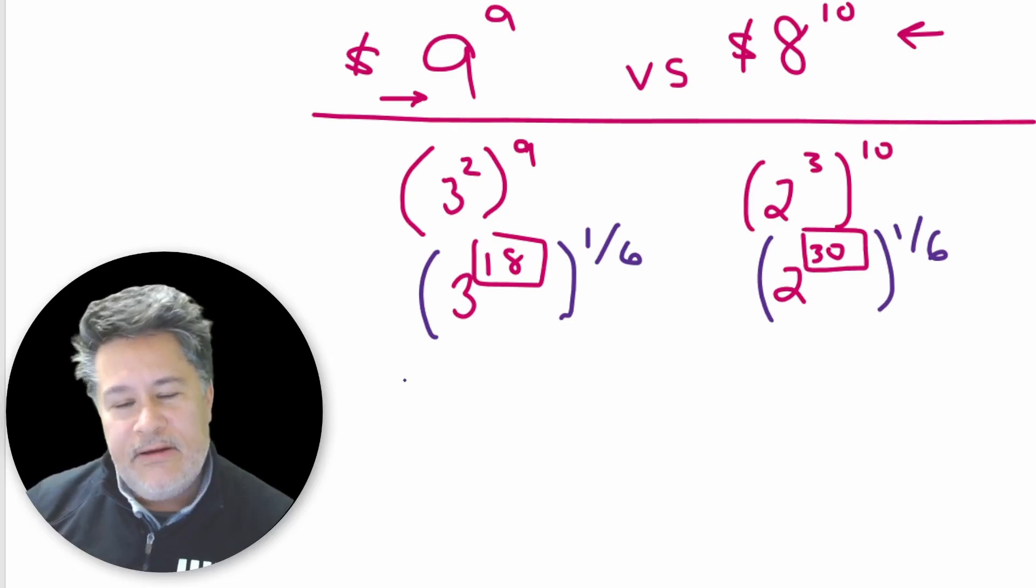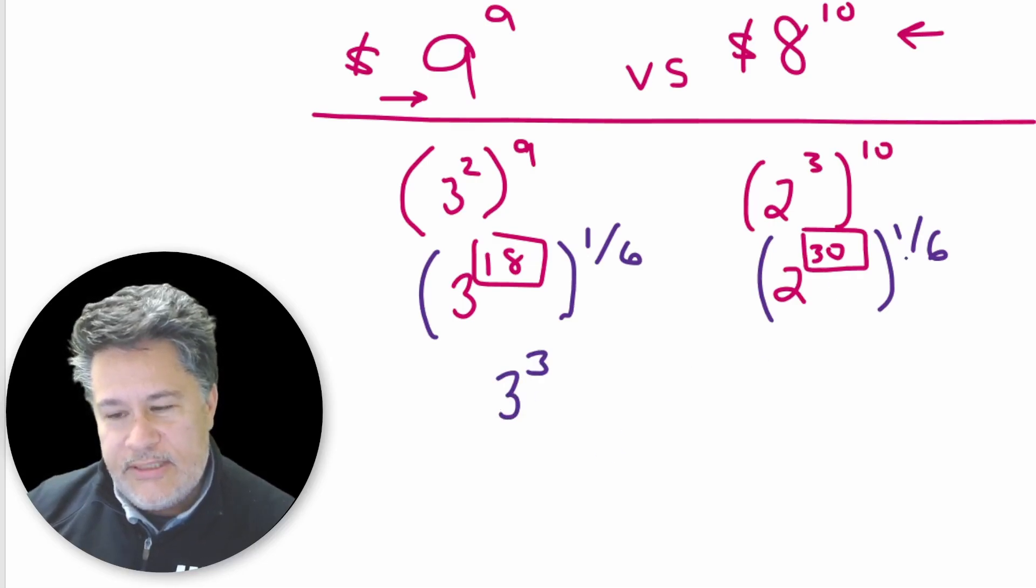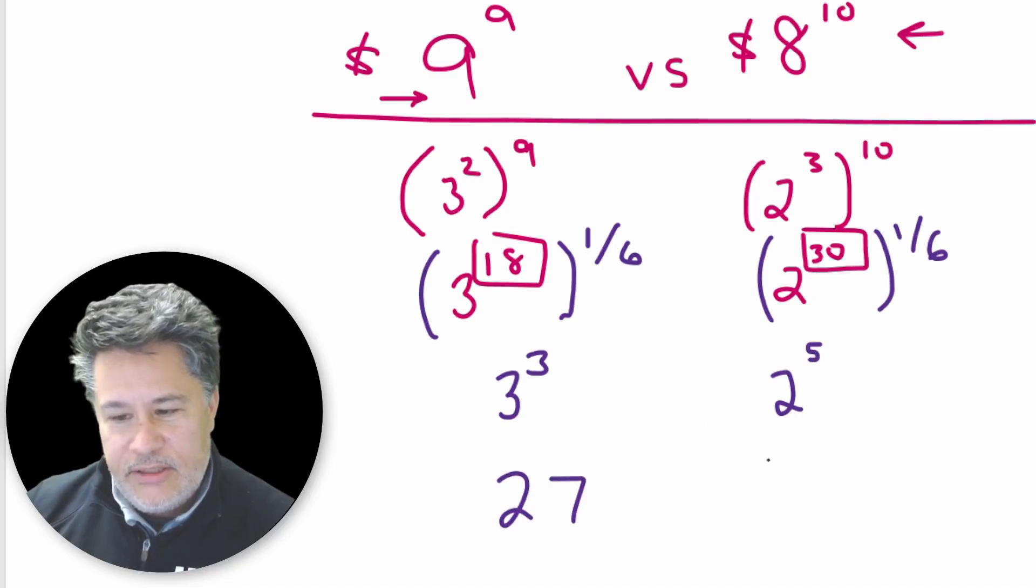We get this reduced to a very simple trivial calculation. Eighteen times a sixth, remember, power to a power means that we need to multiply them. So that's basically going to come out to three cubed versus thirty times a sixth is going to be five. So that's two to the fifth. And now we're simply comparing twenty-seven to thirty-two.